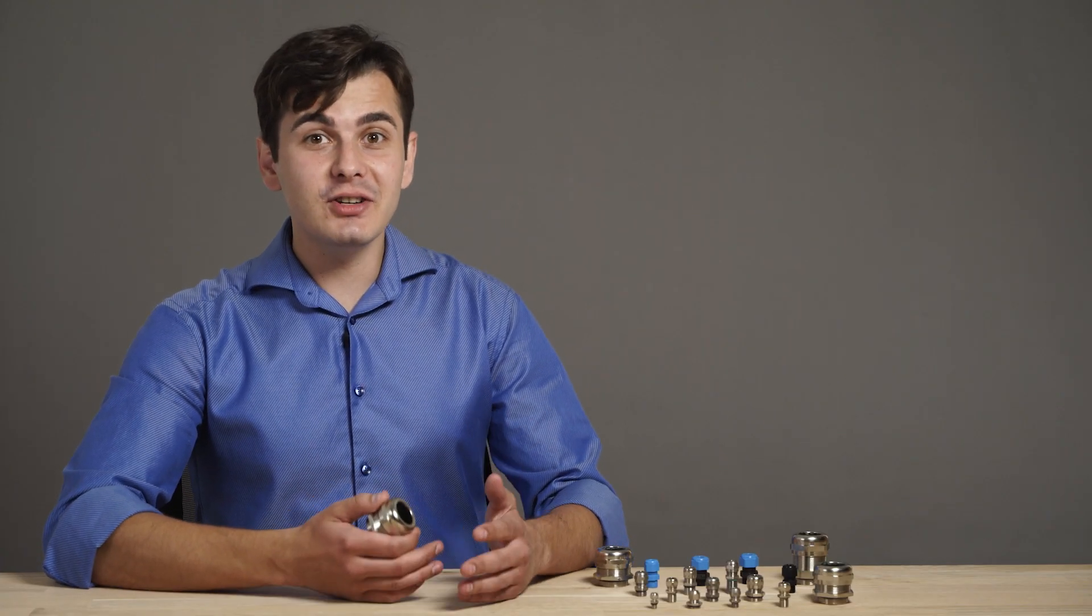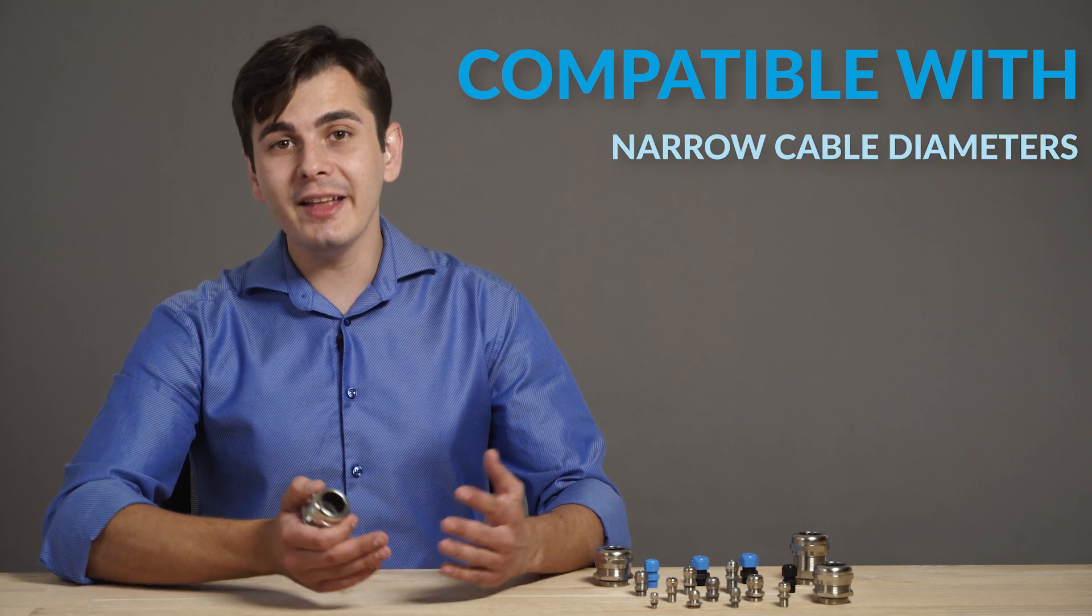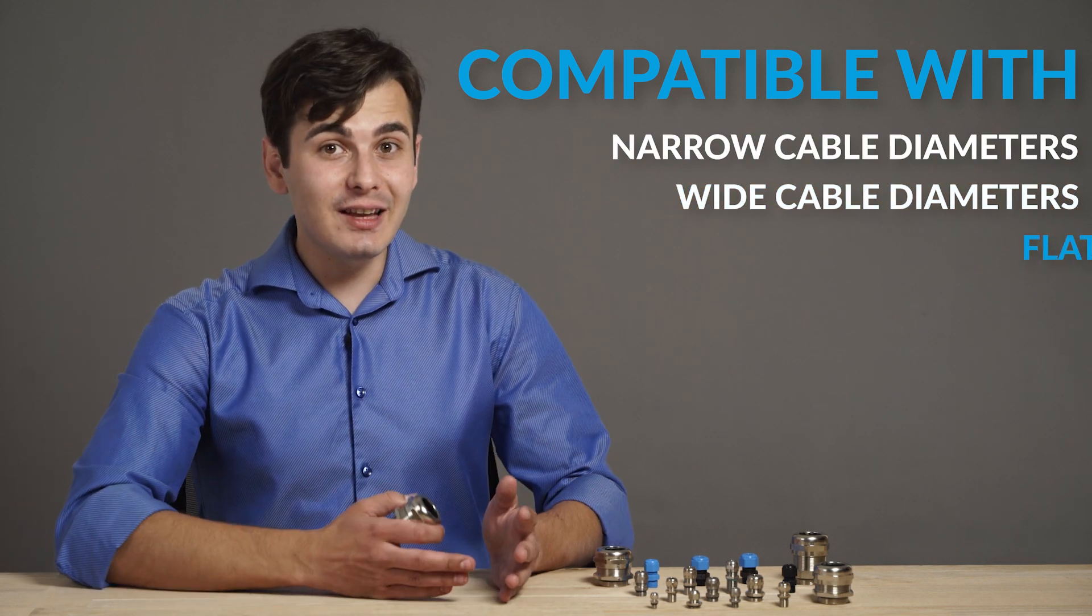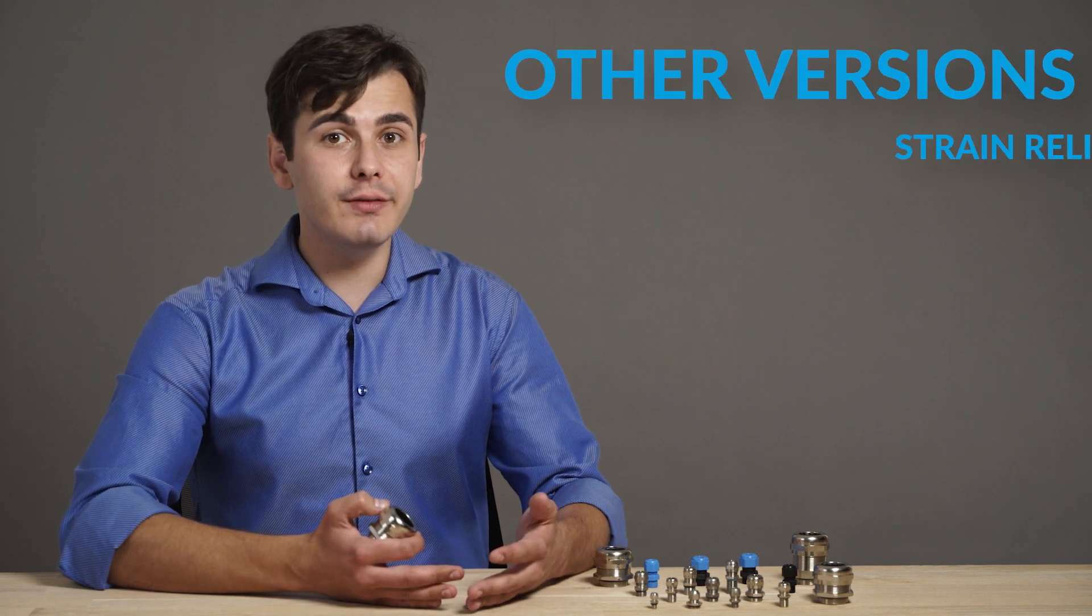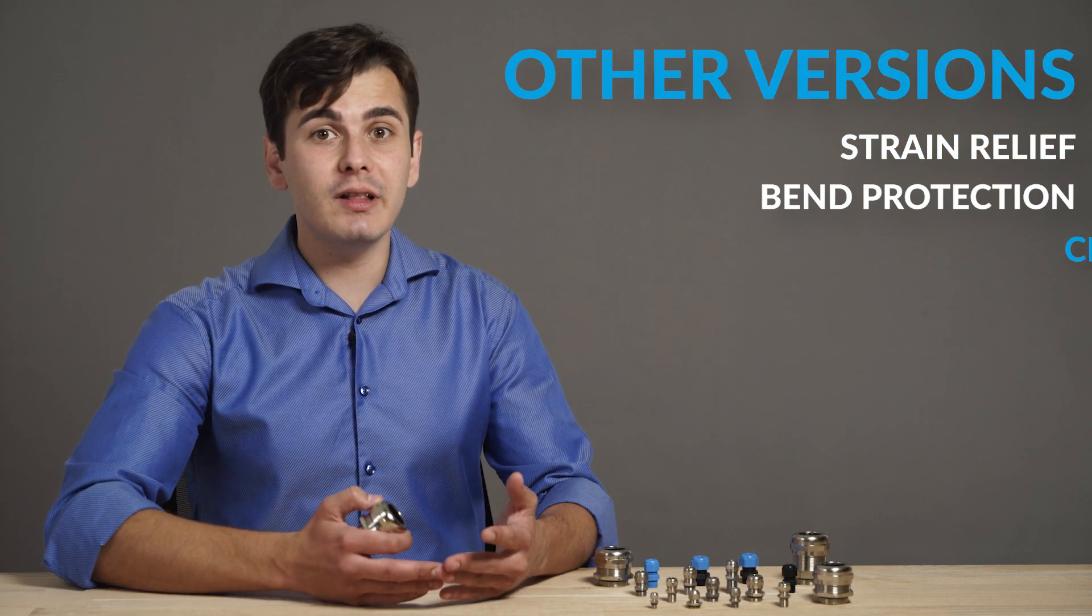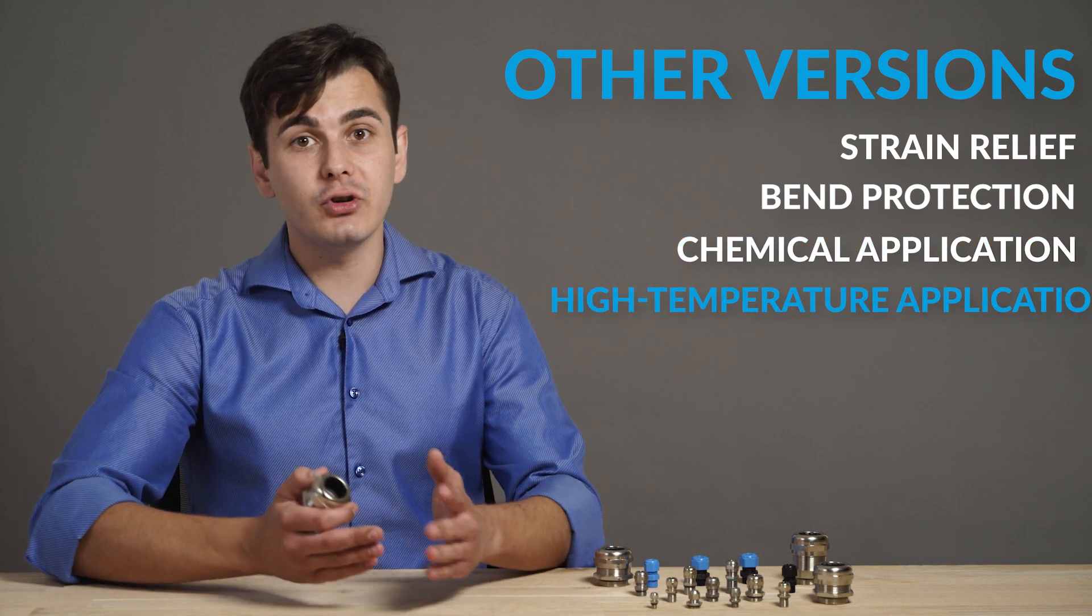The metal cable glands come in different versions that are compatible with narrow and wide cable diameters, flat cables or multiple cables. They also include cable glands with additional strain relief and band protection and cable glands for chemical or high temperature applications.